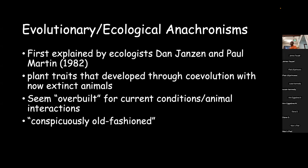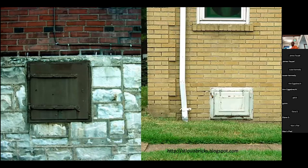One of my favorites is it's 'conspicuously old-fashioned' - it doesn't quite jive with the modern era. Does anybody know what these are? Coal shoots, right? We live in St. Louis, a lot of old brick houses with these coal shoots. What happened is our power grid changed, our methods for heating our home changed, and nobody needs coal delivered to their house anymore, but these are still there. If you had an older contractor still putting coal shoots on new houses, you'd be like, why are you doing this? That would be an anachronistic trait - something that once served a purpose in its time, but because of some shift, is now a little out of place.